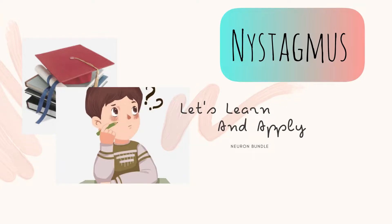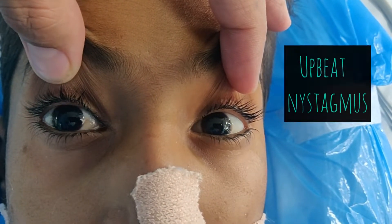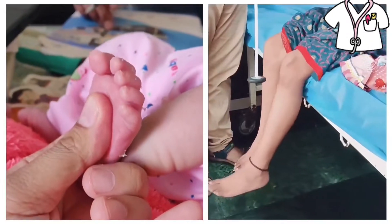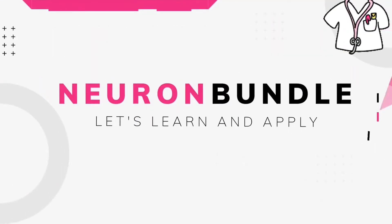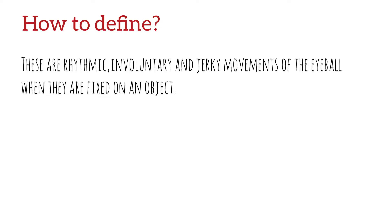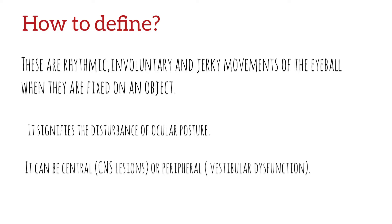Hello Friends! How often do you see a patient with nystagmus? Nystagmus is defined by rhythmic, involuntary and jerky movements of the eyeball when they are fixed on an object. It signifies the disturbance of the ocular posture. It can be central or peripheral.